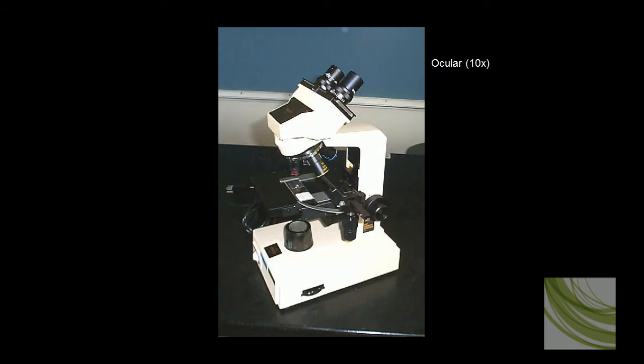We'll start by looking at the various parts of the microscope that are necessary for you to understand this concept of total magnification. The first thing we want to look at is the ocular lens, which has a 10 times magnification.